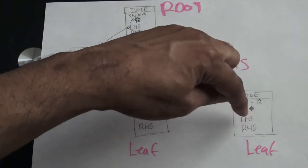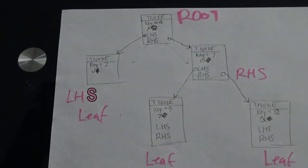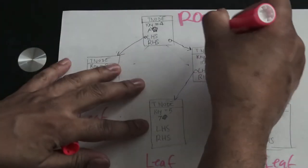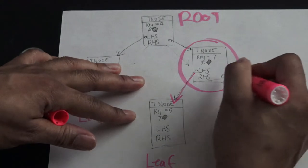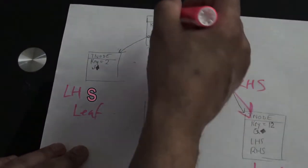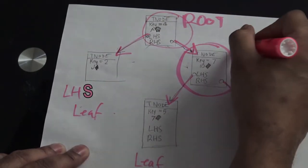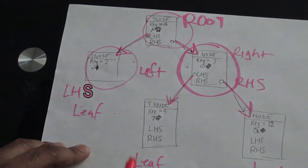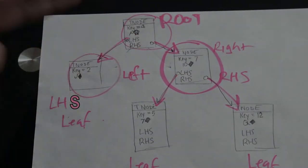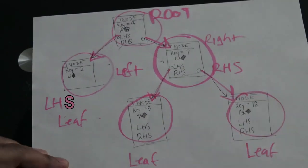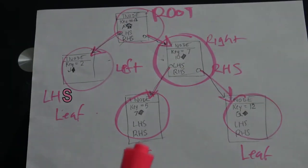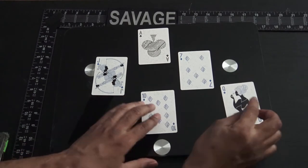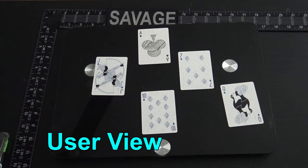On this node we have a left child link but no right child. On this other node we have both a left child and right child being pointed to. Looking at the root, this is the right child and this is the left child. Now let me show you what this actually represents - my goal is to recreate this tree, which is the end-user version.